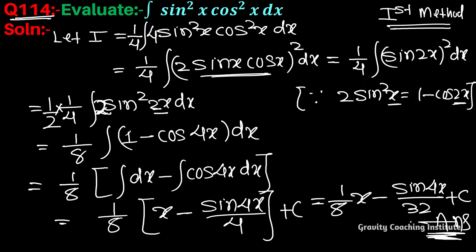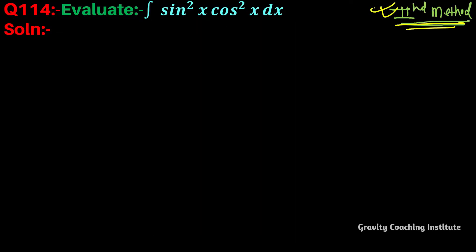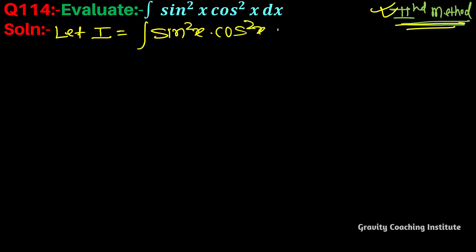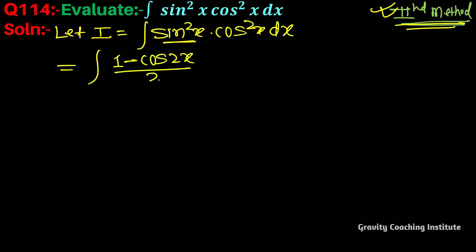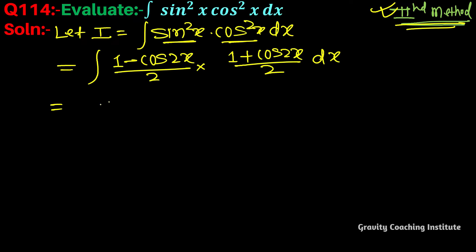Second method: let I equal to integration of sin²x into cos²x dx. We substitute sin²x equal to (1 minus cos 2x) by 2, and cos²x equal to (1 plus cos 2x) by 2. The denominator becomes 2 times 2 equals 4, so we take one by four outside the integral.